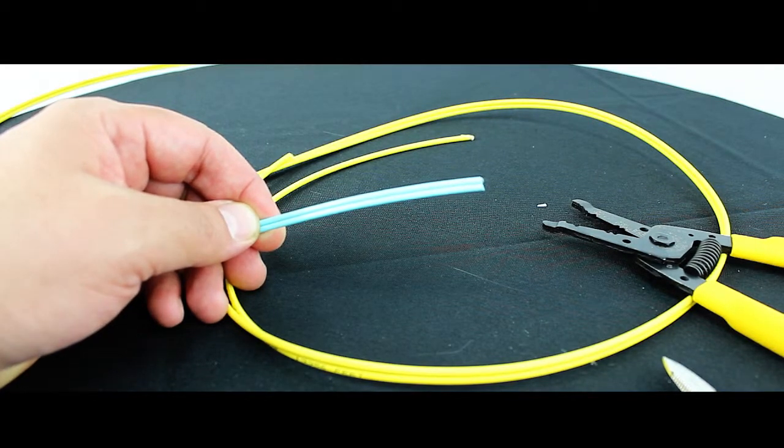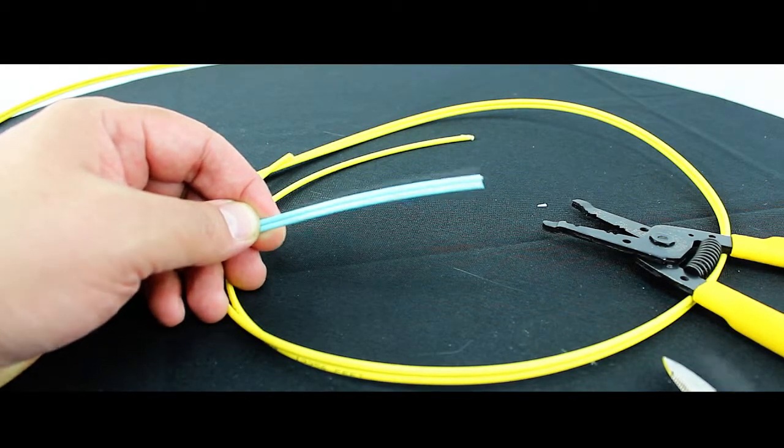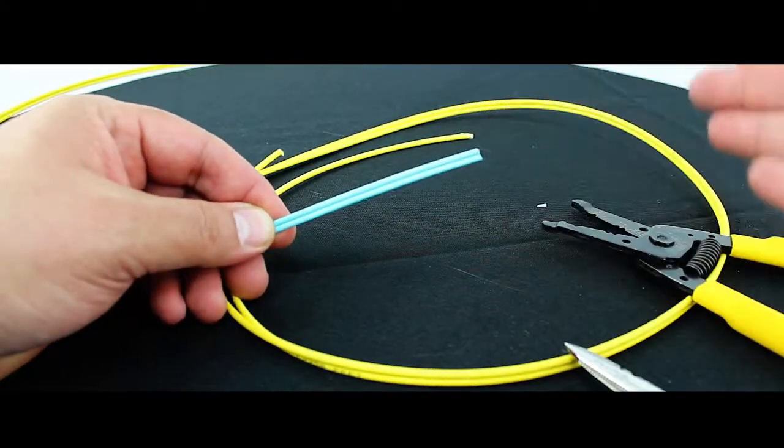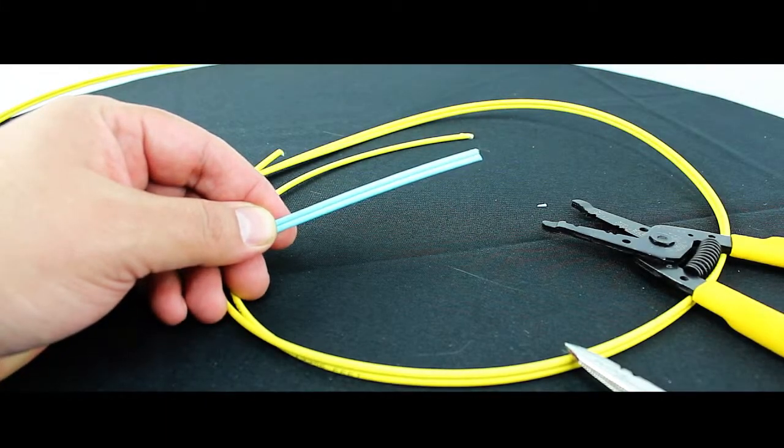Now this is your two strand zip fiber cable. The jacket size is three millimeter, but you'll also find it as two millimeter in space constrained areas.